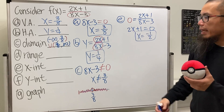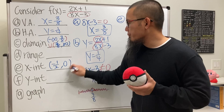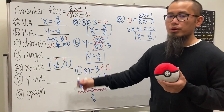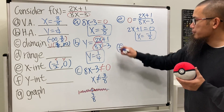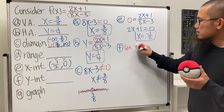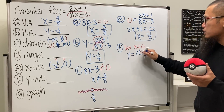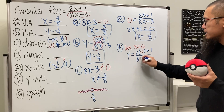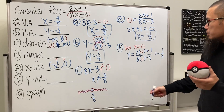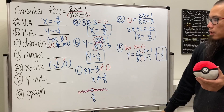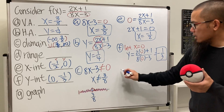The x-intercept is a point, so we write it as (negative 1/2, 0) — the x value and the y value. For the y-intercept, we let x equal zero and plug in: f(0) equals (2 times 0 plus 1) over (8 times 0 minus 3), which gives us negative 1/3. So the y-intercept is the point (0, negative 1/3).